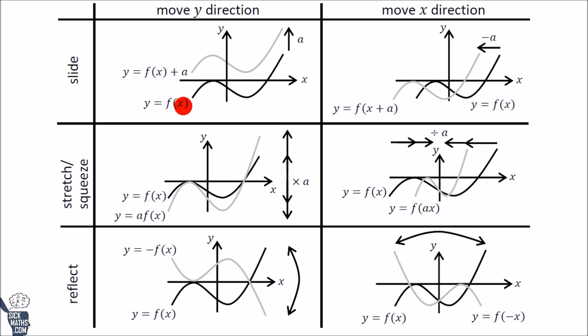If we take an equation of a graph and add something to it, call it a, it will go up a units. If a is a negative number, it will go down a units.